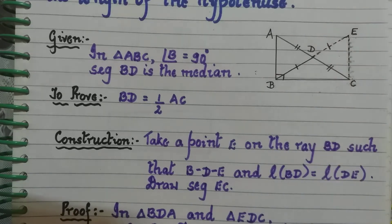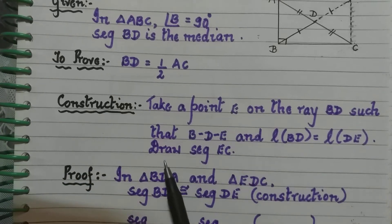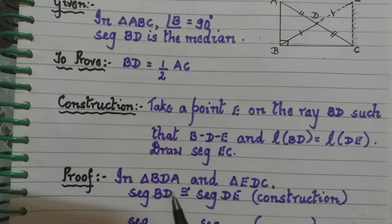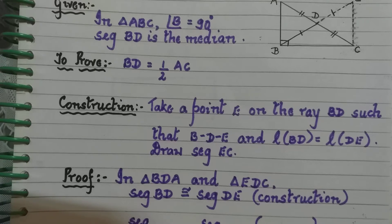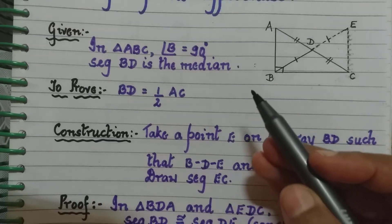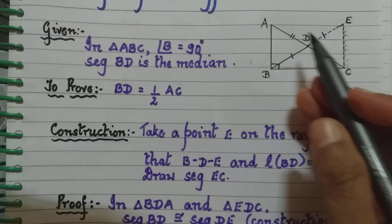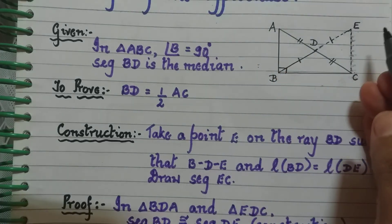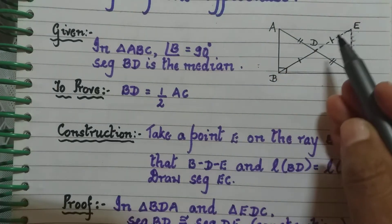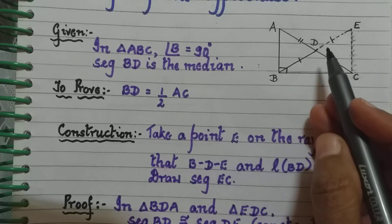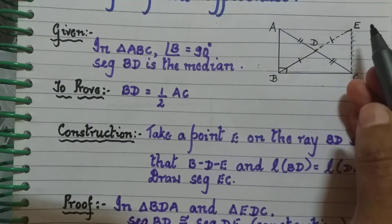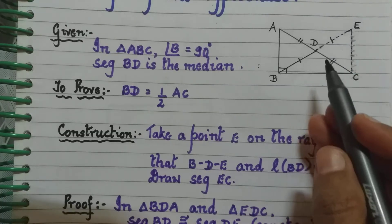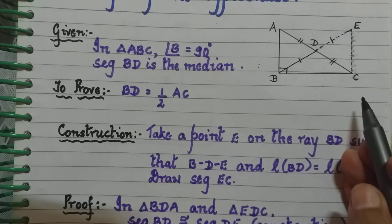Draw segment EC. That is the construction, shown with dotted lines. Now we take two triangles: triangle BDA and triangle EDC. BD is marked with one line and DA with two lines; ED is marked with one line and DC with two lines.